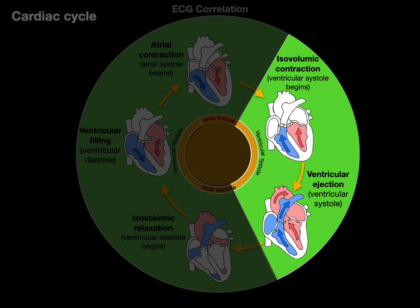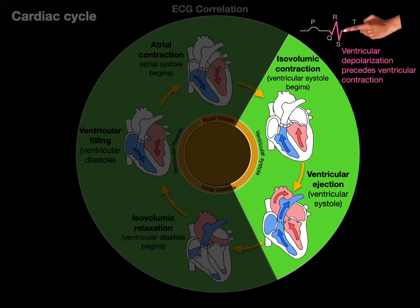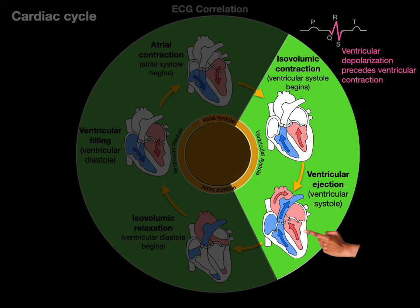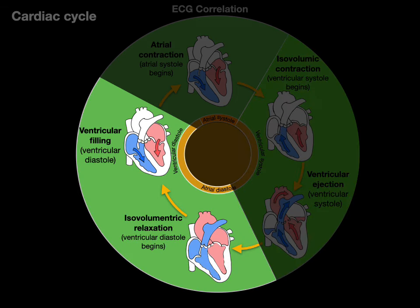During ventricular systole, the QRS complex represents ventricular depolarization, which precedes ventricular contraction. The depolarization wave spreads through the ventricular myocardium, causing calcium release and myosin-actin contraction — the mechanical event. Then at the beginning of diastole, the T wave represents ventricular repolarization following ventricular contraction, as all ventricular myocardium repolarizes back to a resting state. So these electrical events precede the mechanical events.